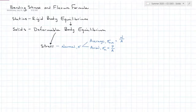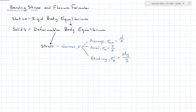Our stress distribution today is going to be bending stress. The bending stress equation, sigma_b, is equal to My over I. M is the internal moment, y is the distance from the neutral axis, and I is the moment of inertia about that neutral axis.